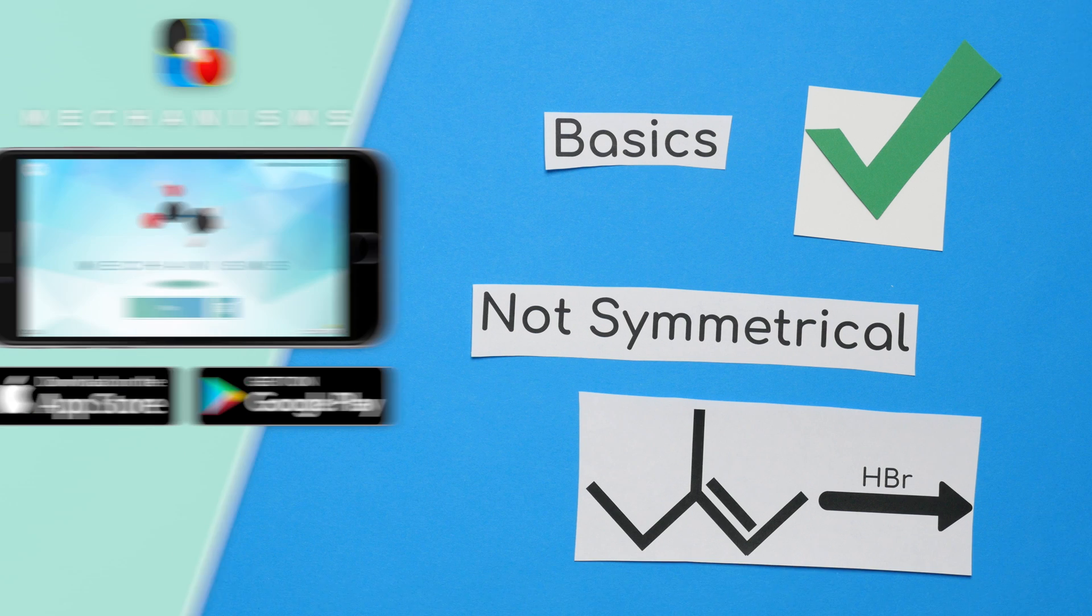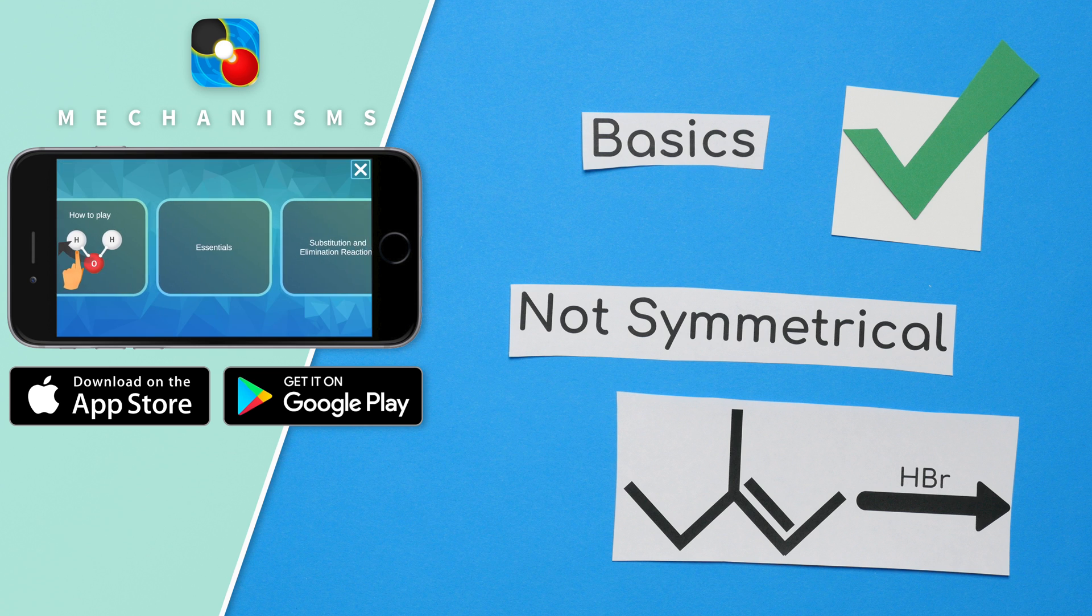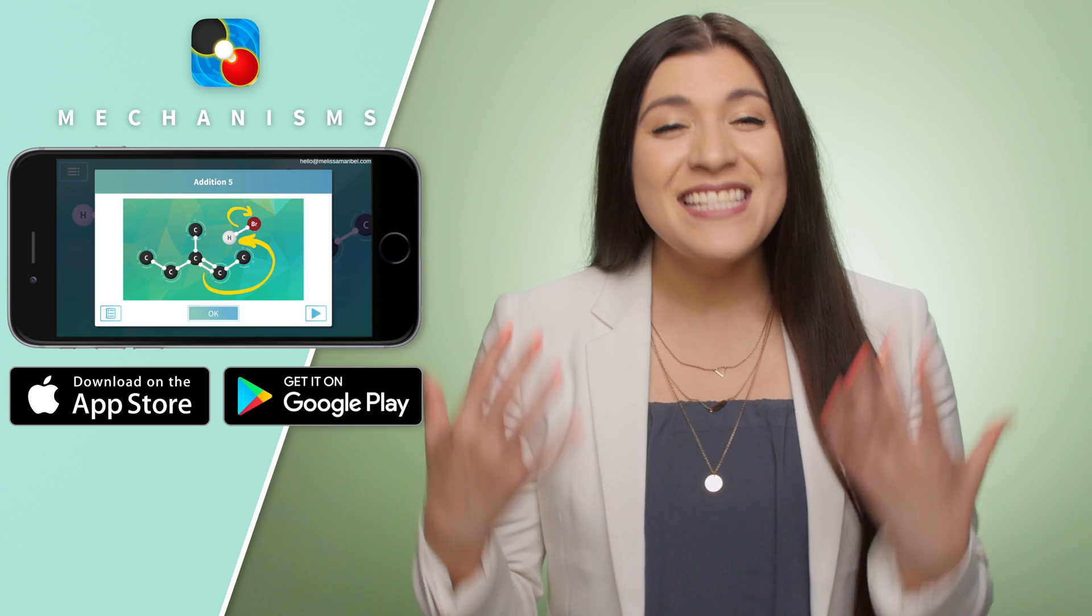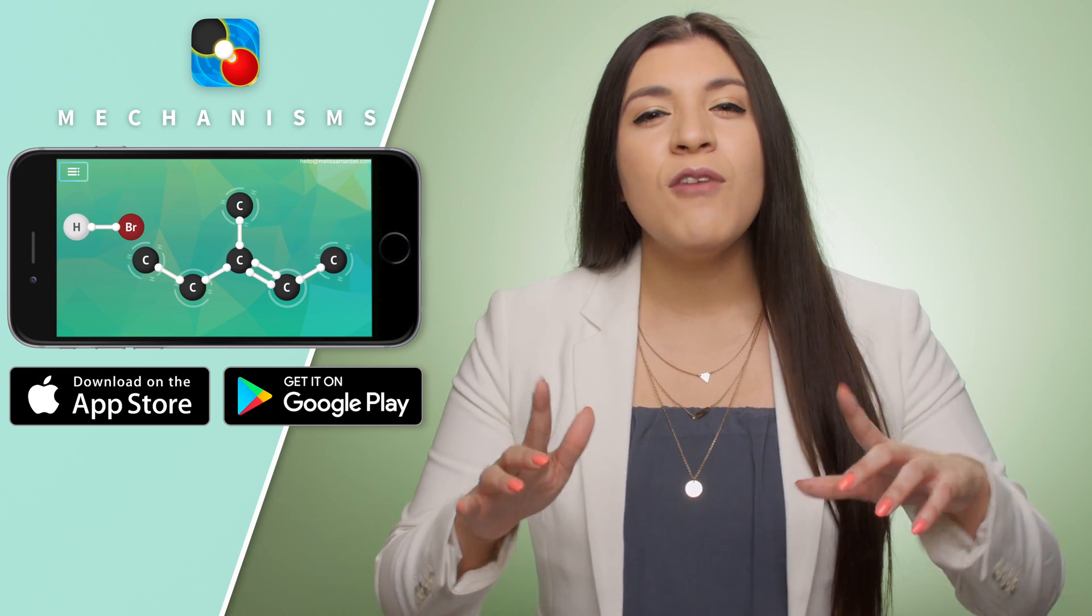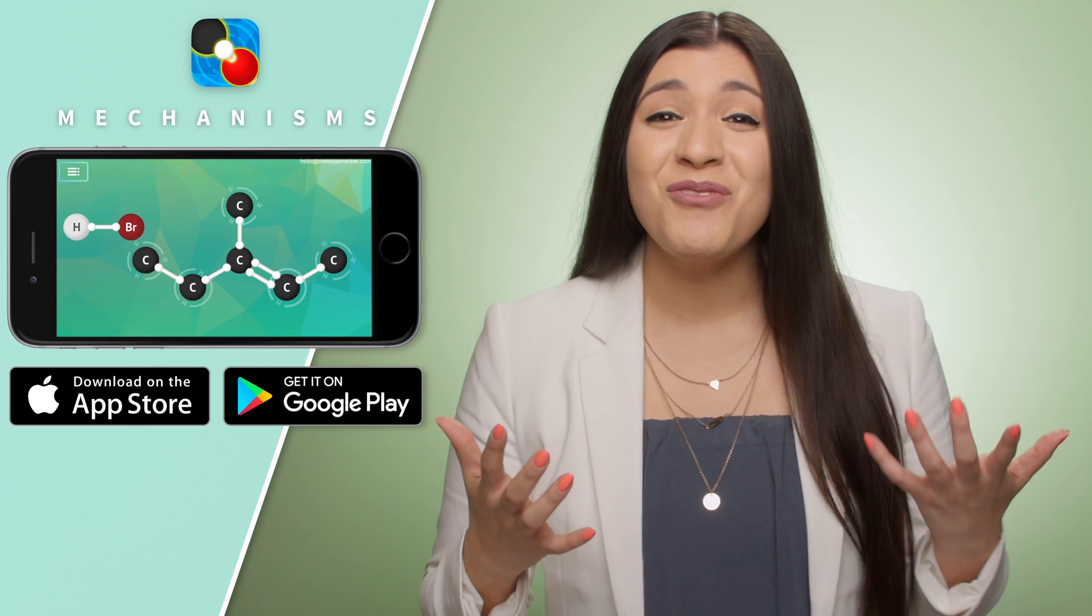Before you click on the next video, try this question out on the mechanisms app. The link to download this app is in the description. And this question is part of their free essentials pack. It is in the third section under addition. It's number five. And I'll see you in the next video where we'll cover what to do with a non-symmetrical alkene and understand Markovnikov's rule.